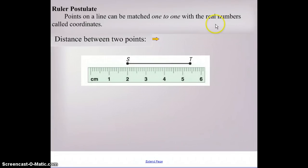The ruler postulate is pretty simple. Points on a line, such as s and t, can be matched one to one, so for every point it corresponds with one number. Points on a line can be matched one to one with the real numbers called coordinates.